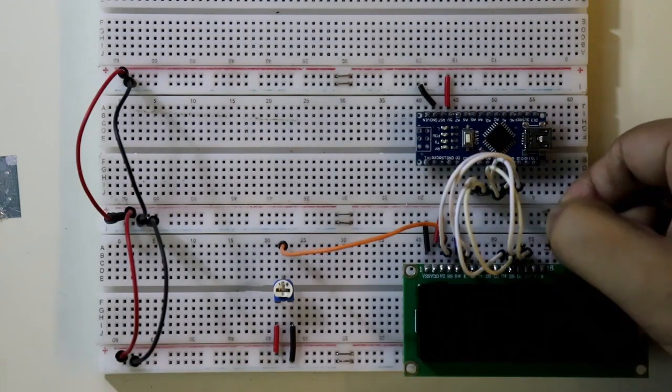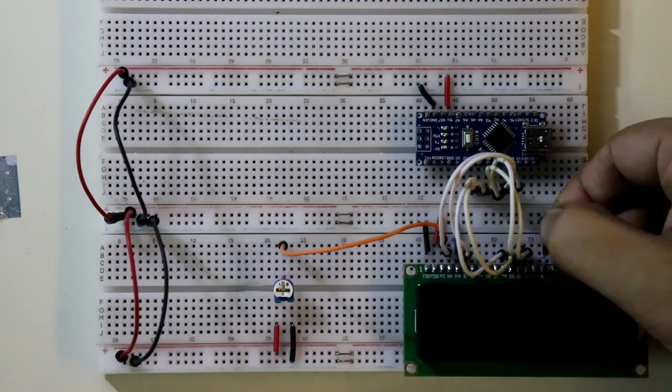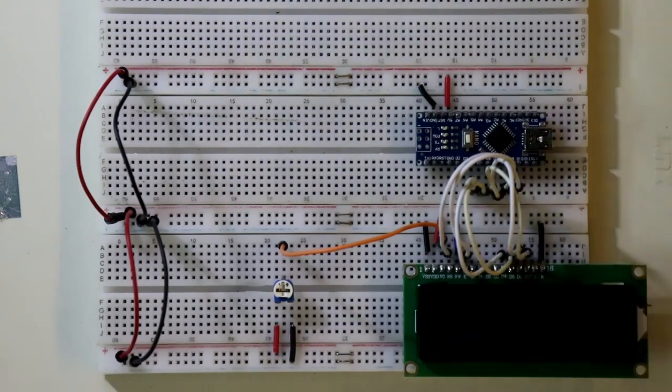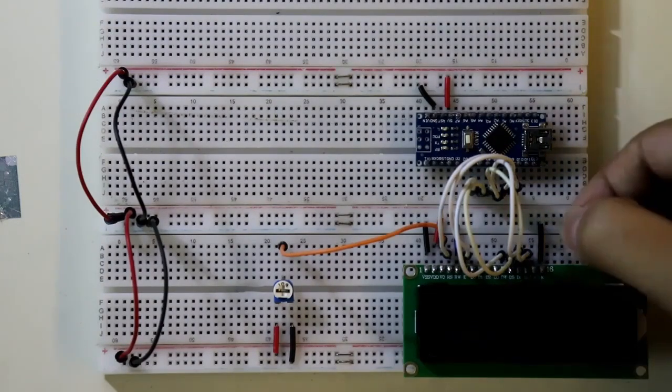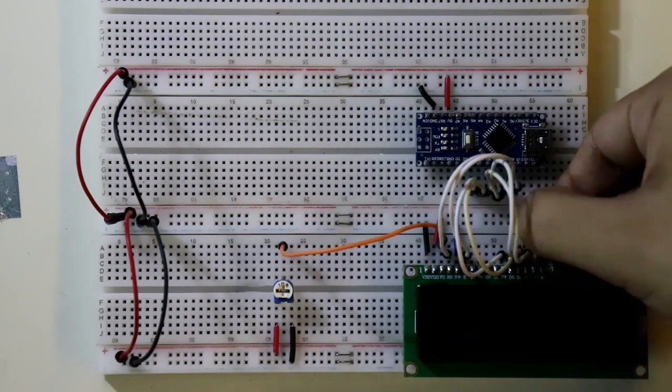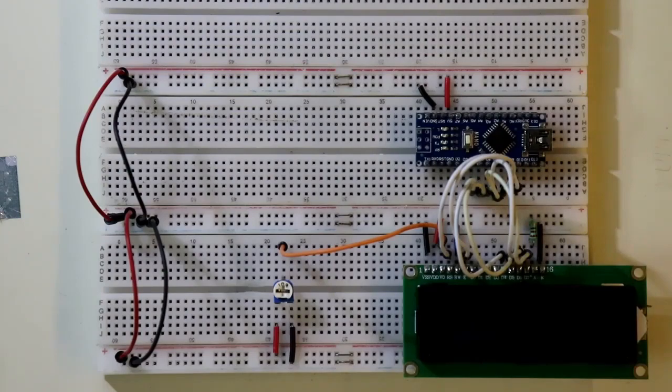Cathode pin of the LED - it is the backlight LED of the display and it is connected to ground. And the anode pin is connected to the plus VCC through a 220 ohms resistor.